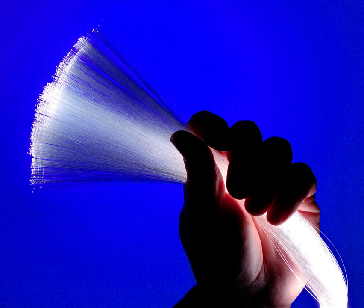A WAN uses a communications channel that combines many types of media such as telephone lines, cables, and air waves. A WAN often makes use of transmission facilities provided by common carriers, such as telephone companies.